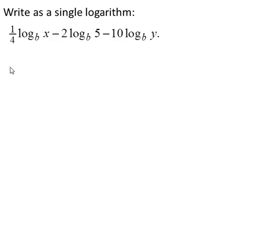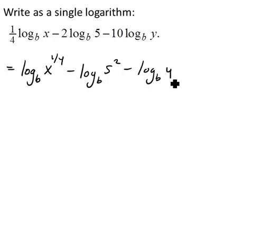We'll start off with our power rule. Each of these numbers that we find in front of the logs will become a power on the part that's inside. So this first term we get log base b of x to the one-fourth. The next term we'd have a log base b of five squared. And in our last term we'd have minus a log base b of y to the tenth.